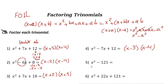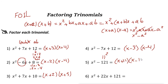Next: x squared minus 121. Since 121 is 11 squared, this is a perfect square subtracted from another perfect square. So you can write the first root, x, plus the second root, 11, times x minus 11: (x + 11)(x − 11). Multiplying these two gives x squared minus 121.